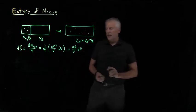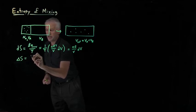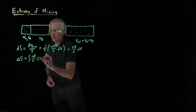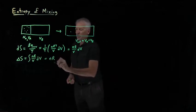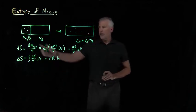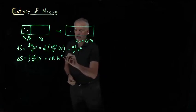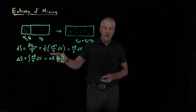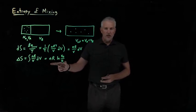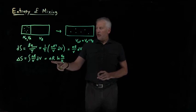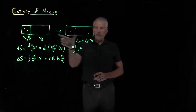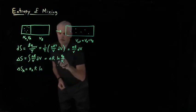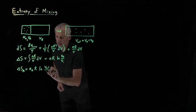That's the differential change in entropy. To get the actual change ΔS, we integrate: ΔS = ∫NR/V dV. On the right side, integrating 1/V gives the natural log of V, so evaluating from initial to final volume gives ΔS = NR ln(V_final / V_initial). Applying that result to gas A expanding from volume V_A to the total volume, the entropy change of gas A is N_A · R · ln(V_total / V_A).